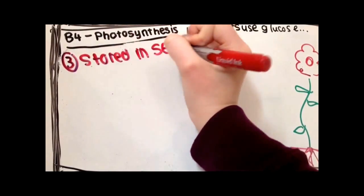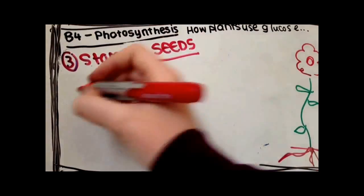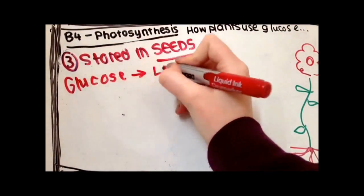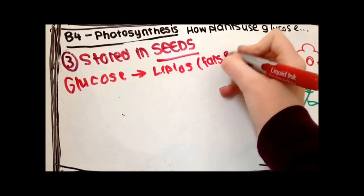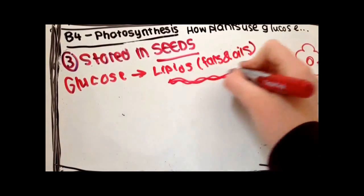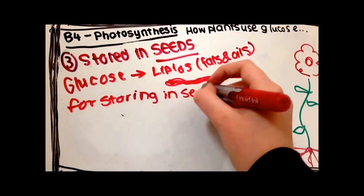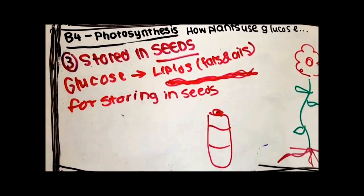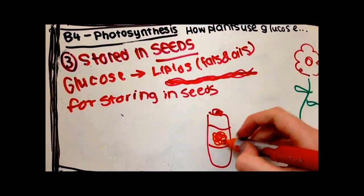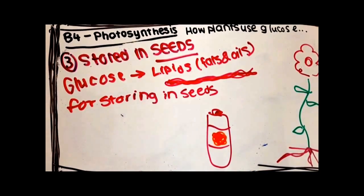Third, glucose is stored in seeds. Glucose is turned into lipids and these are fats and oils and these lipids are for storing in seeds. That's why sunflower seeds for example contain a lot of oil and we use them for cooking oil and margarine.